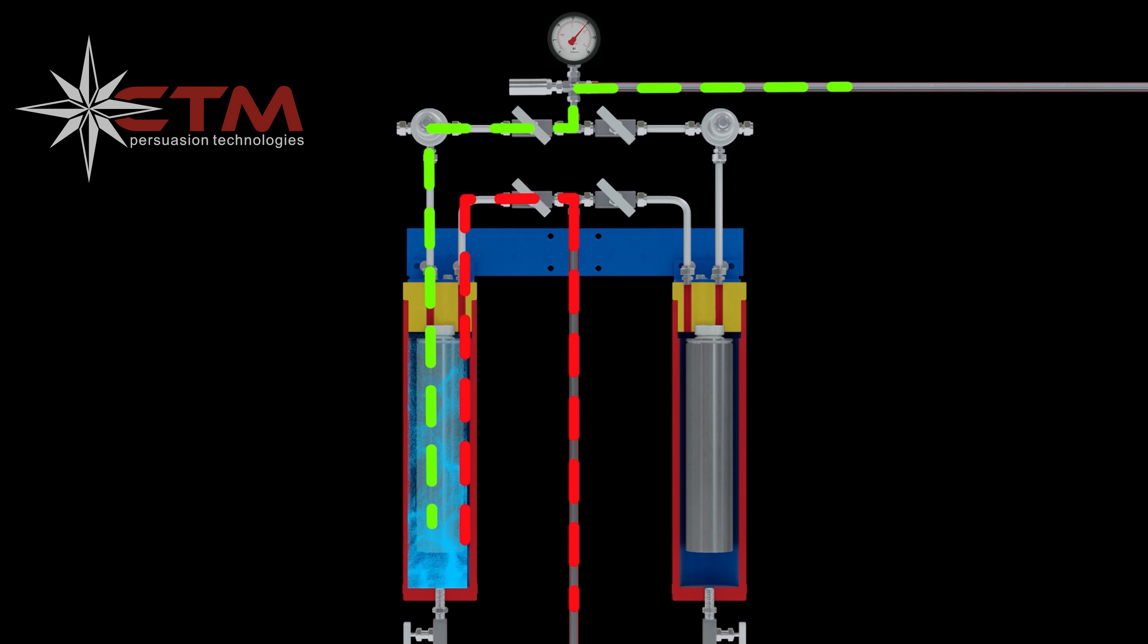When the primary filter cartridge needs to be replaced, incoming flow is automatically diverted to the backup filter. This integrated backup system enables the CleanFlow Plus to operate for longer periods of time between cartridge changes.